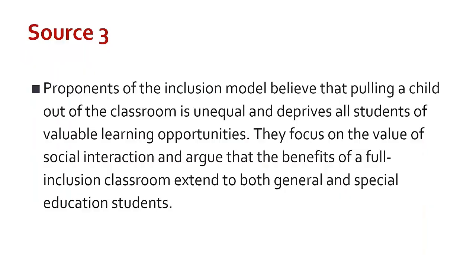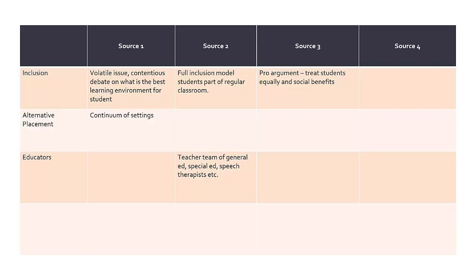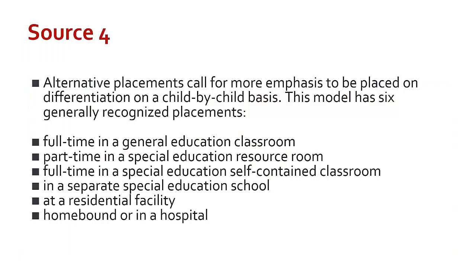In source 3, the main idea is also about inclusion, so we can add it to the existing idea row. There are probably more interesting ideas to pull out here, such as social interaction, but we are going to keep this example simple and short. Source 3 only talks about inclusion, so we can leave the other two idea cells empty. Source 4 is about alternative placement. We can add a summary to the existing row we already have for this idea.